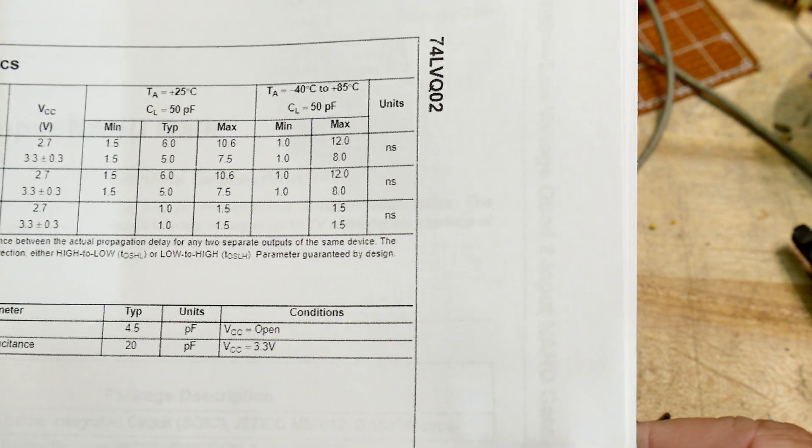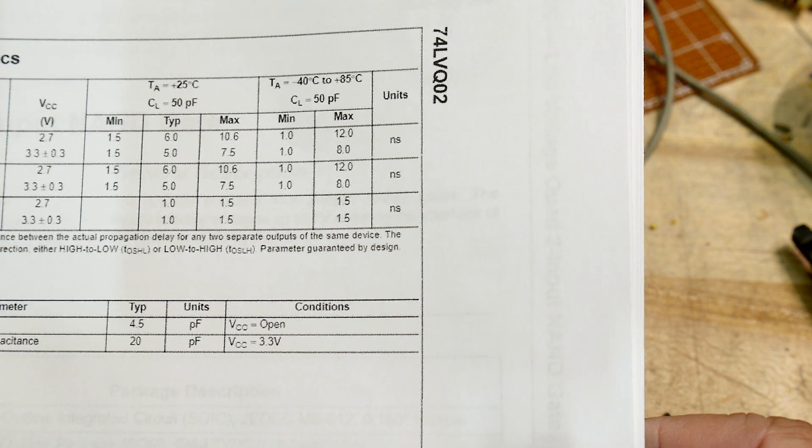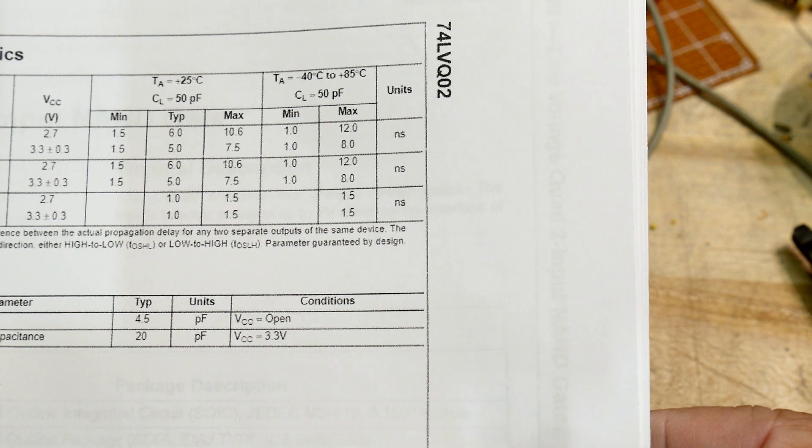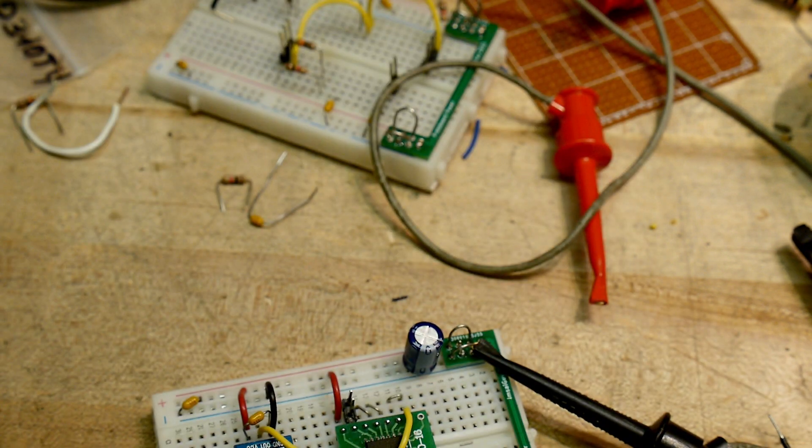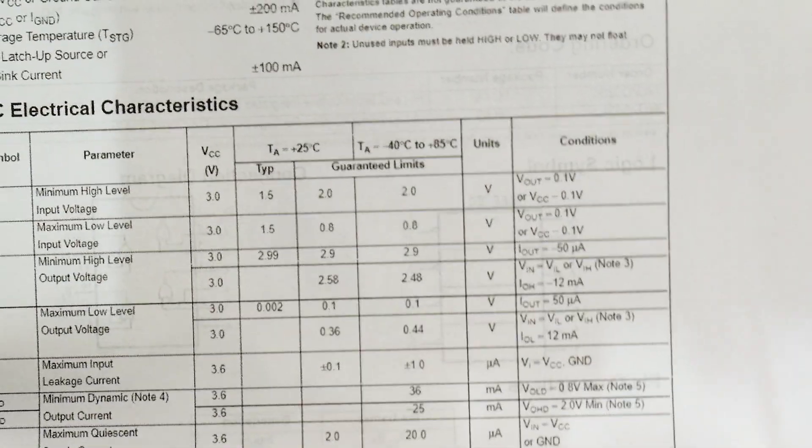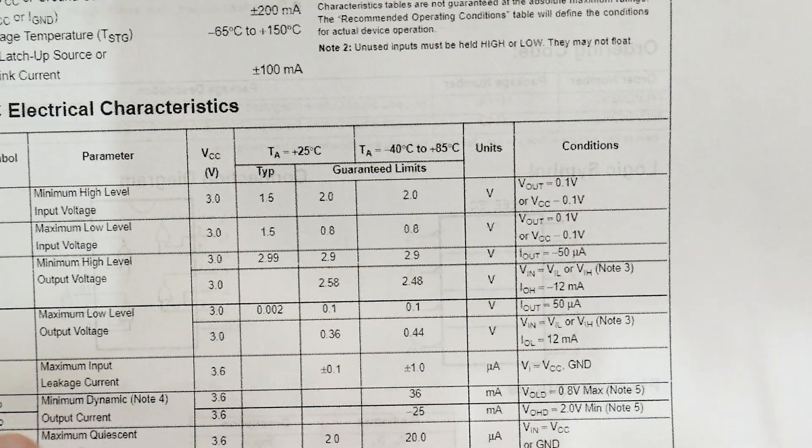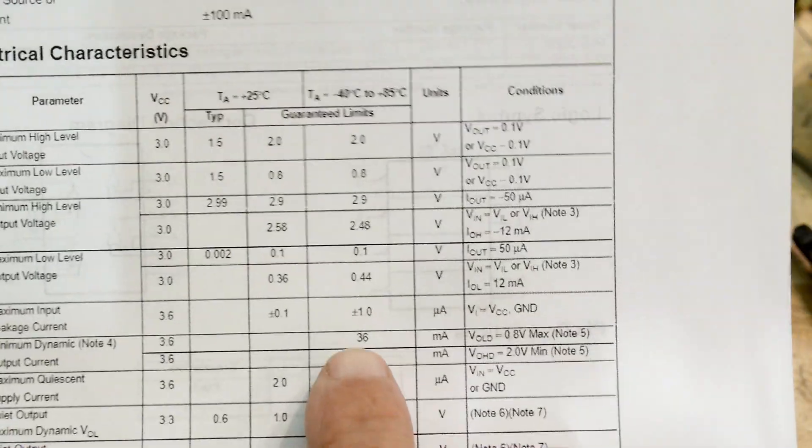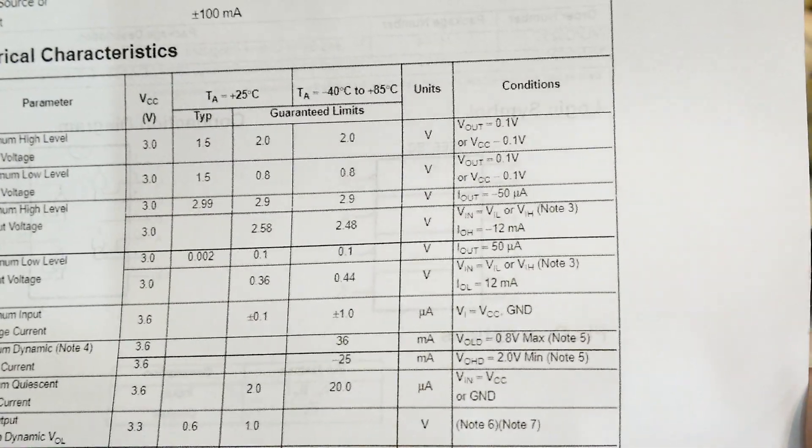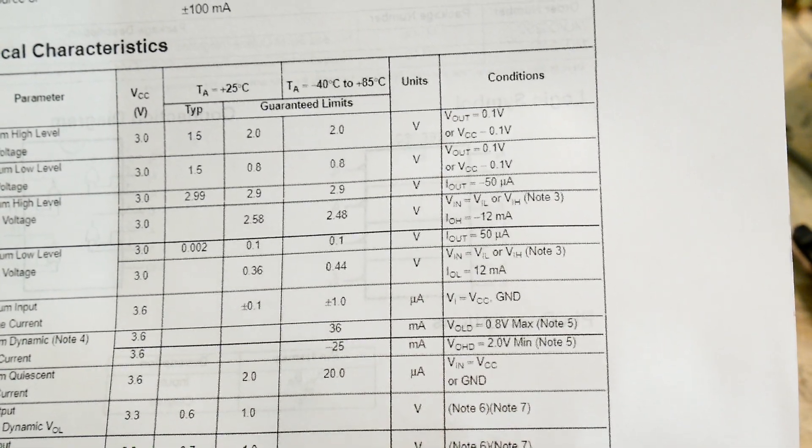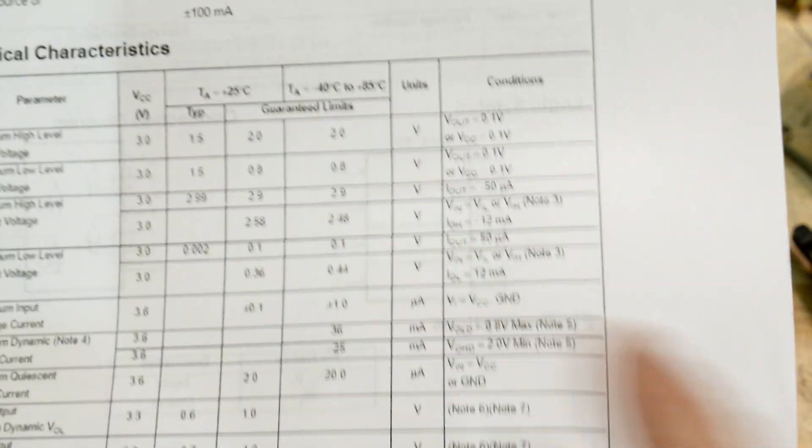Currents are microamps, so it's a really really low current thing. Propagation delay: six nanoseconds, five nanoseconds. Input capacitance: four puff. Output drive capability, IOH, IOL output current, it's pretty healthy. Wow, 36 and 25 milliamps. So it sinks 36 and sources 25. That's pretty good. Minimum quiescent: 20 microamps, nice.